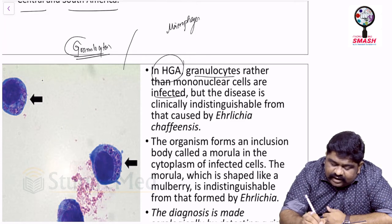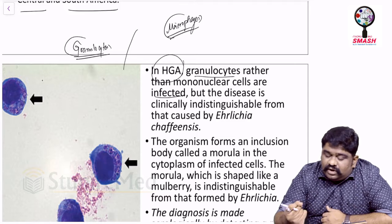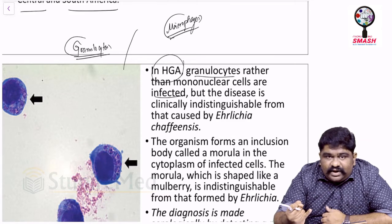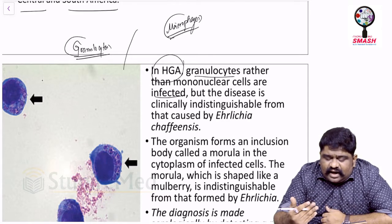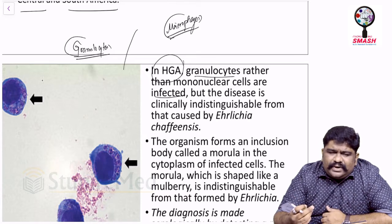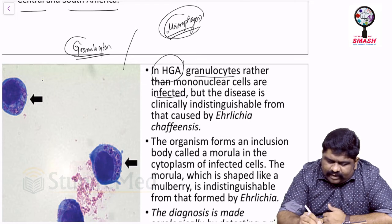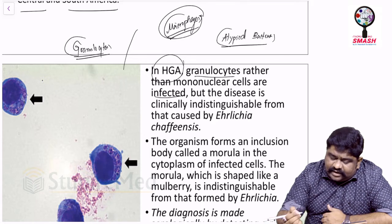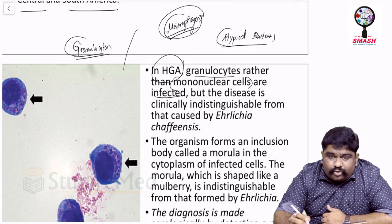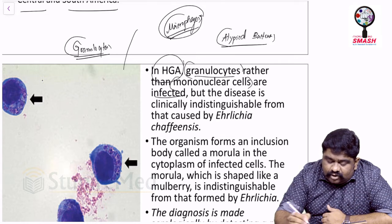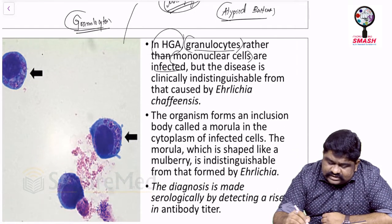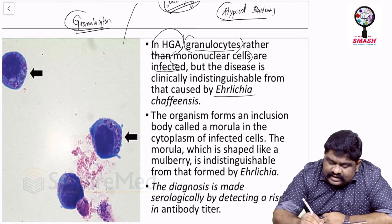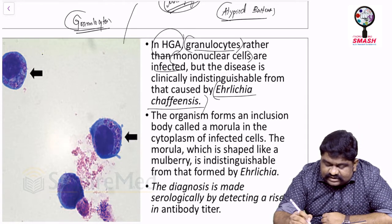Atypical bacteria are generally dealt with by macrophages — think Mycoplasma, Mycobacteria, Rickettsia, Chlamydia, and possibly Leptospira. But Anaplasma is 'atypical of the atypicals': instead of being infected by mononuclear cells like monocytes, it attacks polymorphonuclear granulocytes. The disease is clinically indistinguishable from that caused by Ehrlichia chaffeensis.